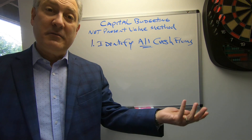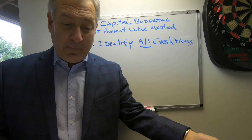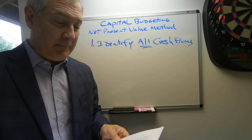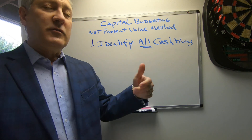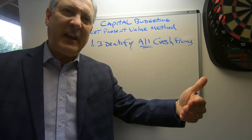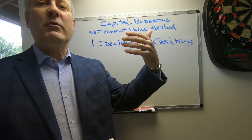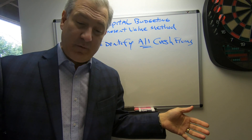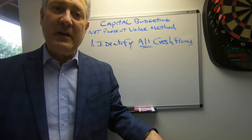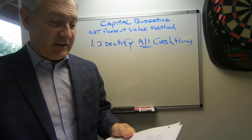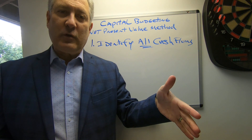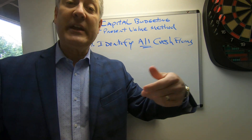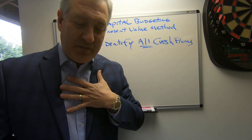Inflows of cash include the net annual operating income from the project — revenues collected minus expenses paid. There's also the sale of existing equipment: as a result of purchasing new equipment, they may sell the old one, resulting in a cash inflow. Additionally, there may be reduced annual expenses, a cost savings occurring on an annual basis. And lastly, the salvage value of the equipment at the end of its useful life is also an inflow.